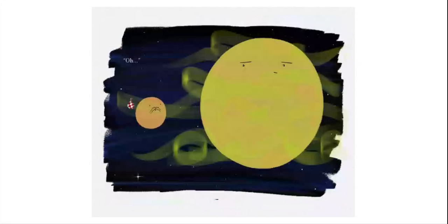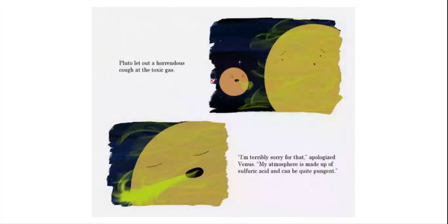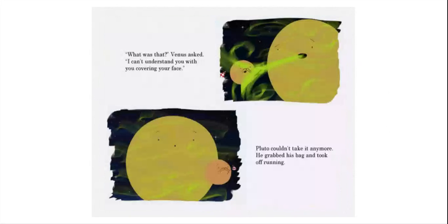P.U. What's that smell, Pluto cried. Oh. Hello, my name is Pluto. Hello, Pluto, the planet said with a stretch of rotten eggs spewing from his breath. My name's Venus. Pluto let out a horrendous cough at the toxic gas. I'm terribly sorry for that, apologized Venus. My atmosphere is made of sulfuric acid and can be quite pungent. Pluto could hardly breathe every time the planet spoke. Please, no more, he managed to say. What's that, Venus asked. I can't understand you with you covering your face. Pluto couldn't take it anymore. He grabbed his bag and took off running.